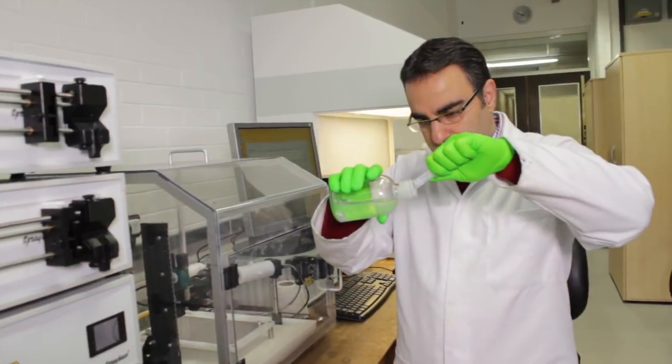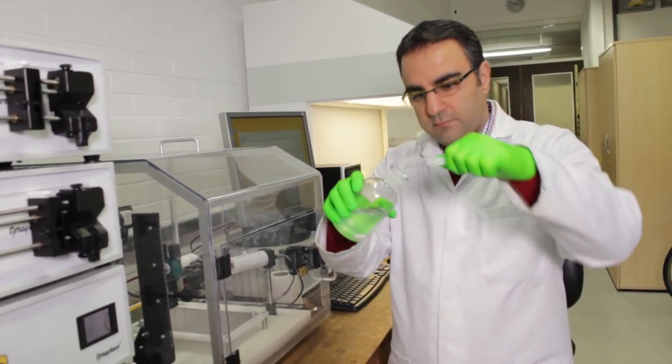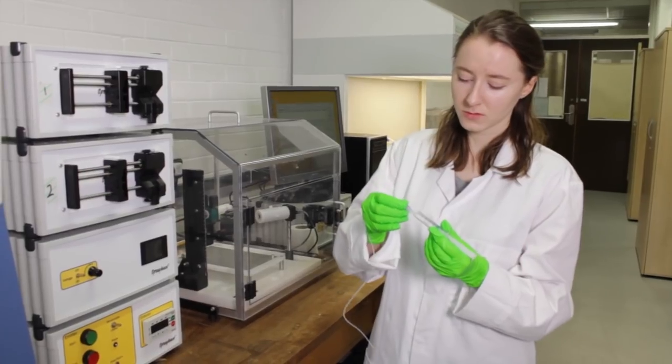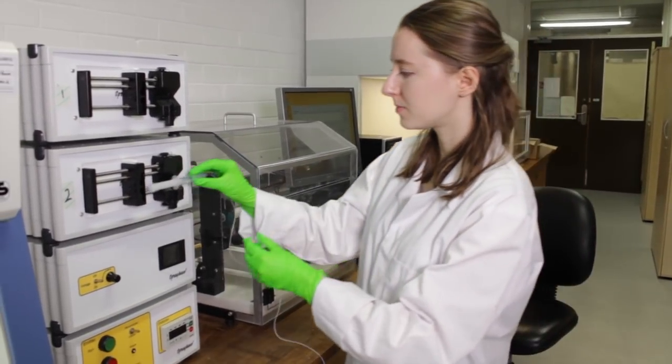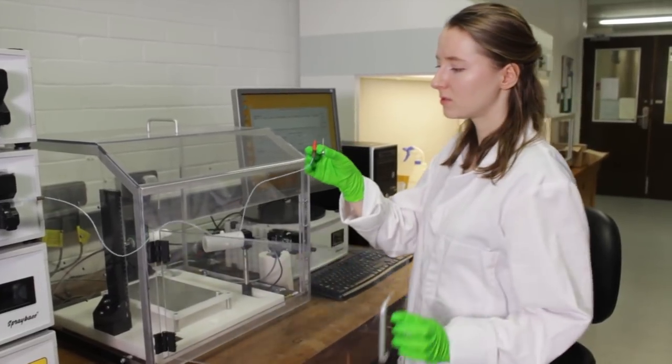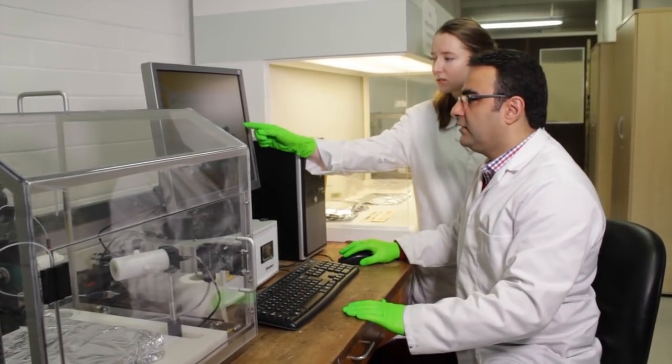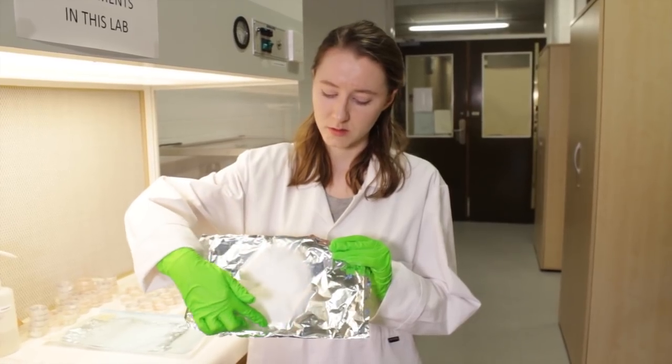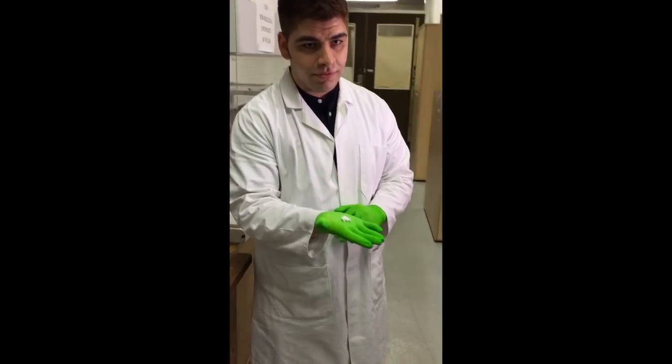Polymer solution was transferred into a 5ml syringe. The syringe was connected to a pump and tubing. The flow rate and camera were adjusted and the electrospinning started. This is an example of electrospun sheet or tube.